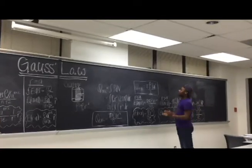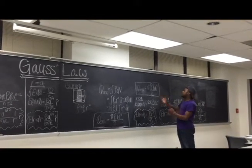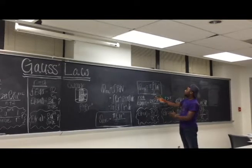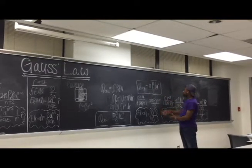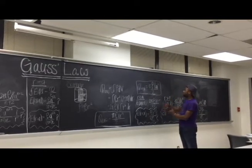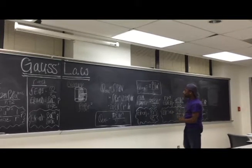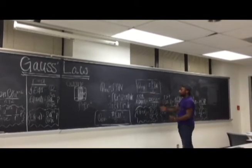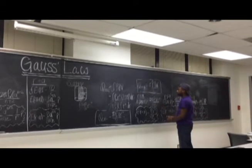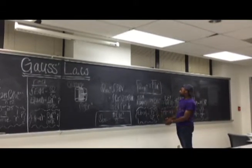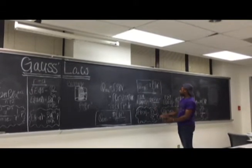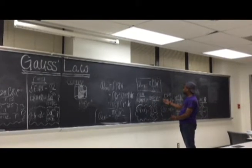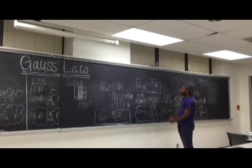To get the total charge, substitute A for R, so it equals pi rho-naught L times A to the 4th divided by 2. For an example where R is less than A, the electric field times the area equals 2 pi rho-naught L to the 4th divided by 4 epsilon-naught.